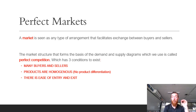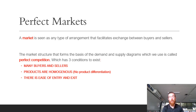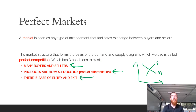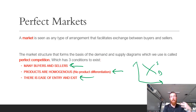The last thing we're going to look at today is perfect competition. A market in economics is any arrangement that facilitates the exchange of goods and services between buyers and sellers. The market structure that forms the basis of the supply and demand diagrams is called perfect competition, and it has three conditions: there are many buyers and sellers; products are homogenous or there is no product differentiation, meaning every product is the same no matter who you buy it from; and there is ease of entry and exit, with low startup costs making it easy to enter or leave an industry.